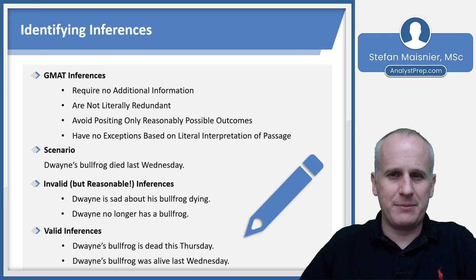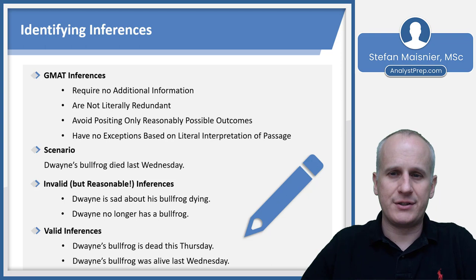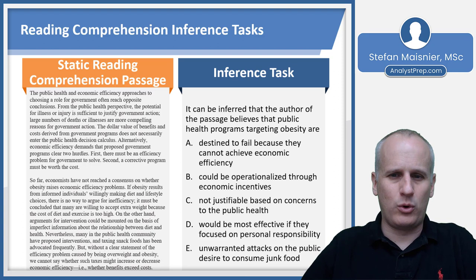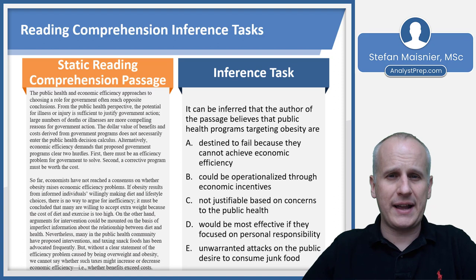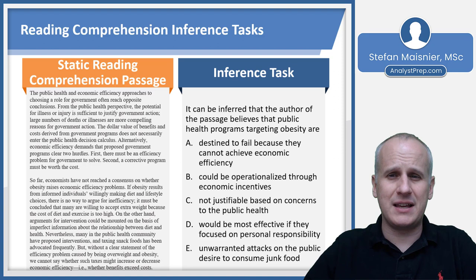On the GMAT, inferences are things that, without any additional information and based solely on definitions of terms, are 100% certain without any outside knowledge. Now that we've seen how inferences work hypothetically, let's consider one as a question with a passage you might recognize from one of our other lessons. We're always going to set up our scratch work, writing out our question as a standard question. We see the clumsy GMAT-style language: 'It can be inferred that the author of the passage believes that public health programs targeting obesity are...' — so we simplify this as: what must the author of the passage believe about health programs targeting obesity?